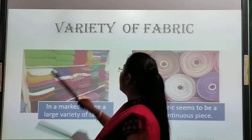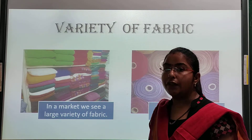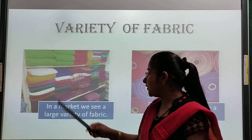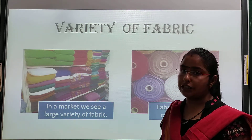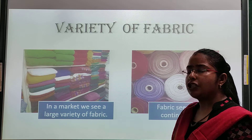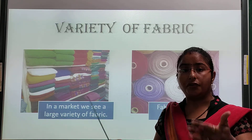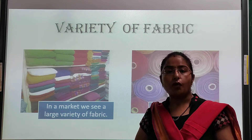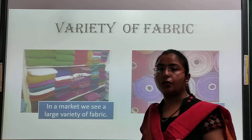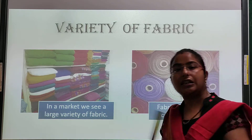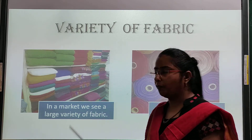Now we will see the variety of fabric. In our day-to-day life, in a market, we see a large variety of fabrics — like cotton, silk, jute, nylon, rayon. These are the names of the fabrics which we use in our day-to-day life. Everyone wants a different type of fabric — some like cotton, some like silk, some like rayon.